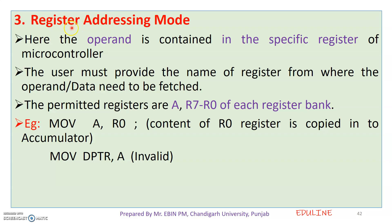Next is the register addressing mode. In register addressing mode, the operand is contained in a specific register of the microcontroller. The user must provide the name of the register from where the operand or data needs to be fetched. The registers used are the accumulator and R0 through R7.